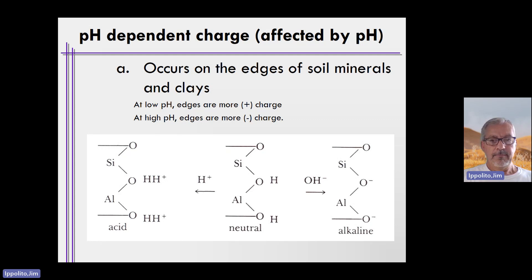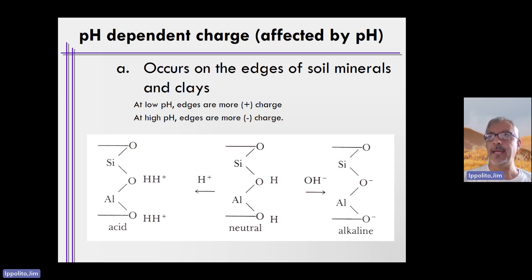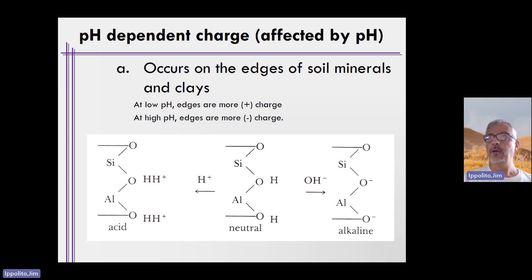Unlike isomorphic substitution, which results in negative charge unaffected by pH, there are substances in our soils that are affected by pH. pH will affect the negative charge or potentially create positive charges within the soil. This occurs on organic phases or organic matter, and it also occurs on the edges of some soil minerals and clays.